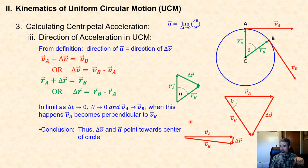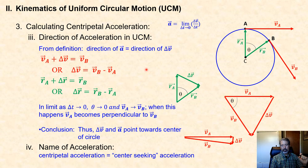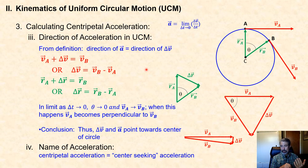As that object moves at a constant speed in a circle, it experiences an acceleration directed towards the center of that circle. We call that centripetal acceleration.